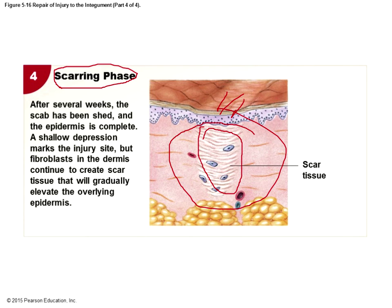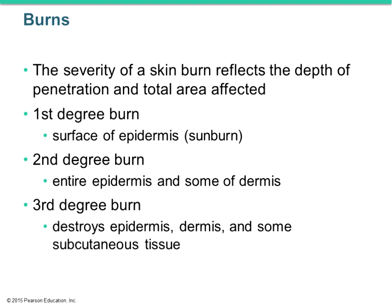Finally, the scarring phase — fibroblasts lay down collagen fibers, and there may be a higher incidence of fibrous tissue in that connective tissue. The result might be a scar at the top, which is a result of what's happening in the dermis, not the epidermis.